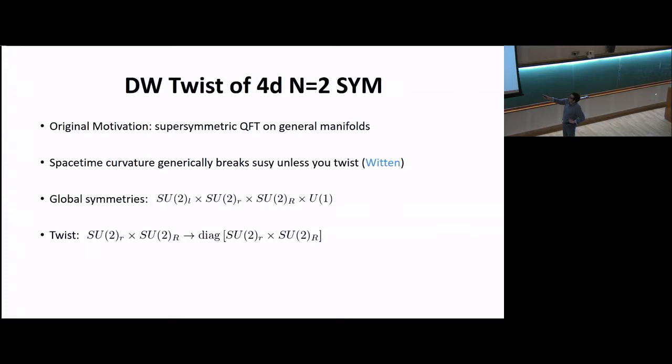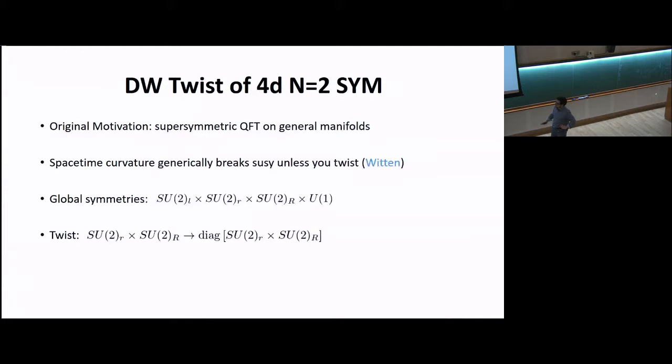For the specific case of 4D N=2 super Yang-Mills, you start by thinking about the global symmetries: SU(2)_L times SU(2)_R, which are locally the 4D Lorentz group, as well as an SU(2) r-symmetry and a U(1) r-symmetry with a six-dimensional origin — you can think of this U(1) as a rotation in the two-dimensional plane orthogonal to the four spatial dimensions when reducing from 6D to 4D. The twist amounts to taking the diagonal subgroup of the SU(2) from the Lorentz group with the SU(2) from the r-symmetry.